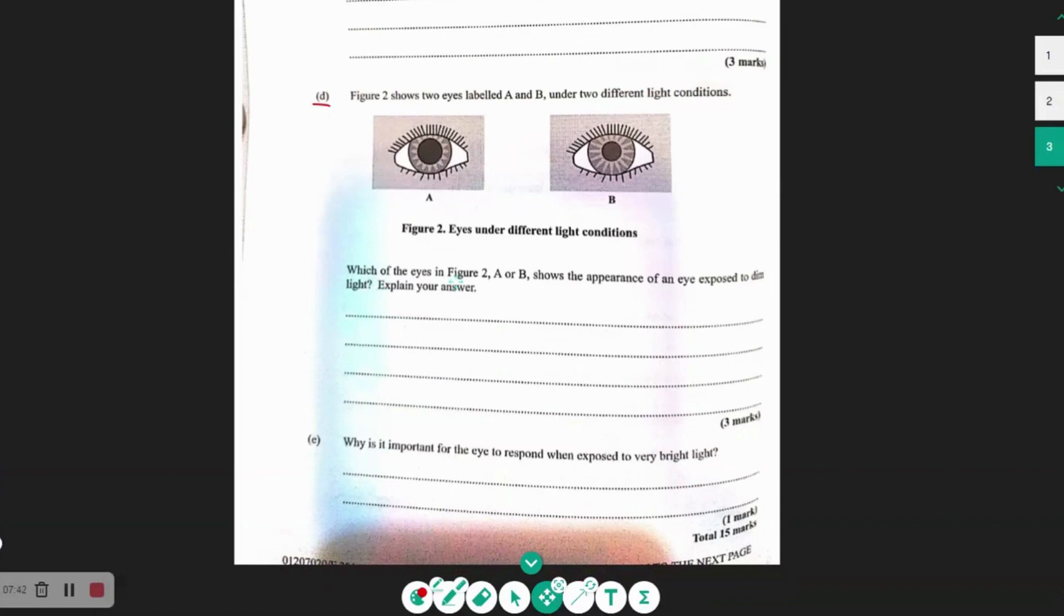They want to know which of the eyes in figure 2, A or B, shows the appearance of an eye that has been exposed to dim light. And they want you to explain your answer. So what would it be? Would it be A or B? The answer would be A.